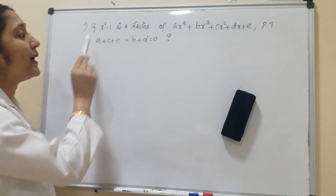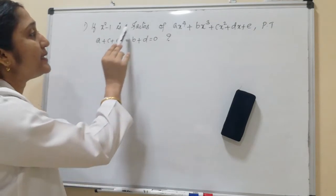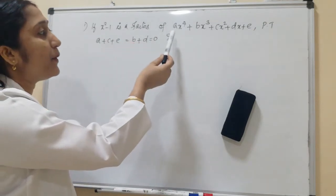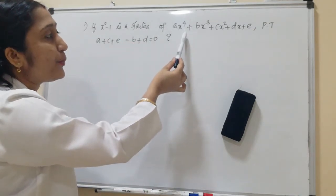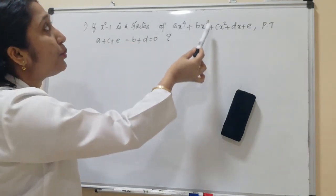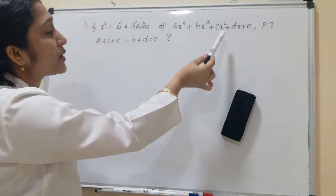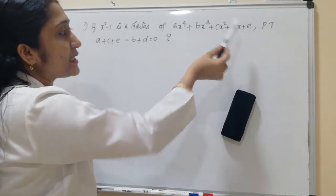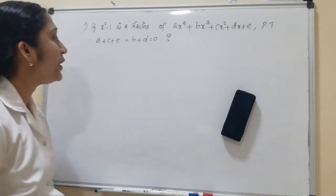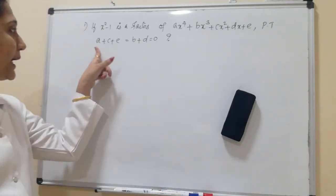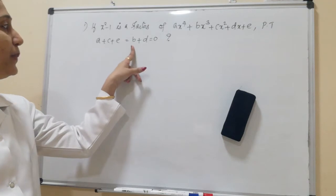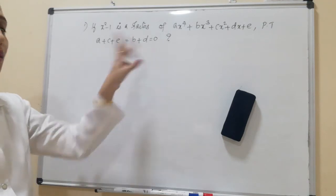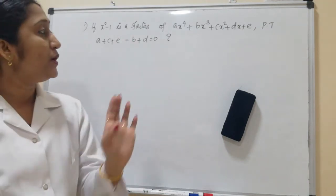If x squared minus 1 is a factor of the polynomial ax⁴ + bx³ + cx² + dx + e, prove that a + c + e = b + d = 0.